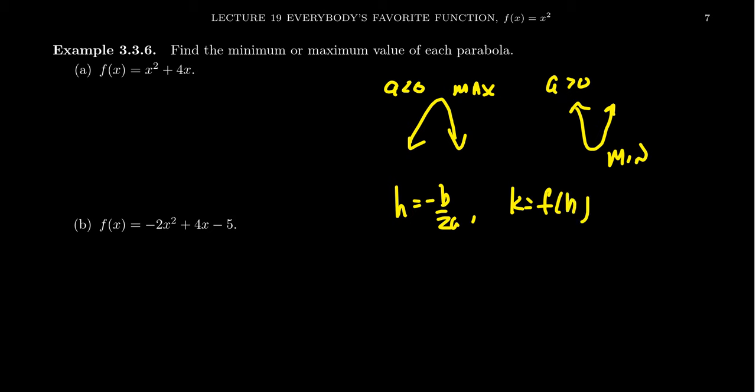So looking at the first one, we can see that the leading coefficient there is a 1, which is positive. That tells us that the graph is going to be concave up, and then our vertex is going to be a minimum value. So to find the vertex, we're going to first do h. h is going to be, by the formula, negative b over 2a, which we see that's going to be negative 4 over 2 times 1. So we end up with a negative 2.